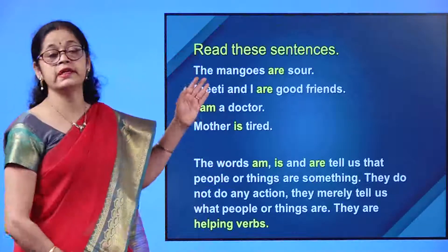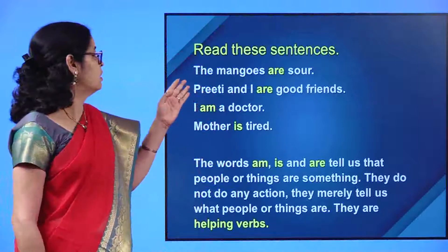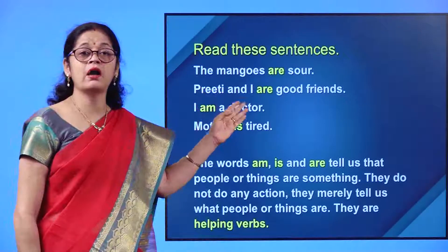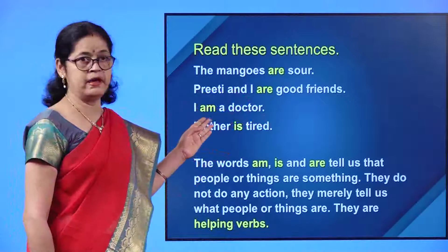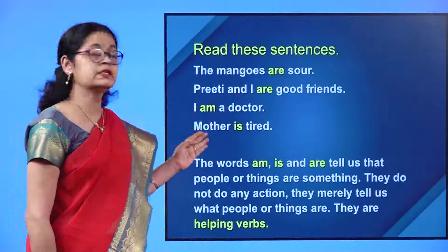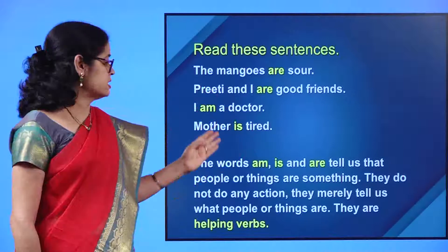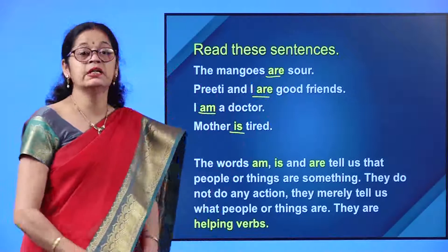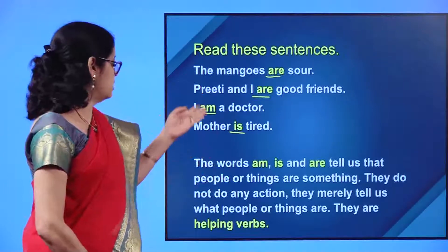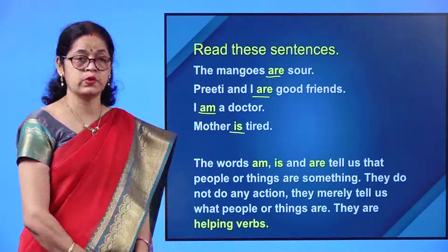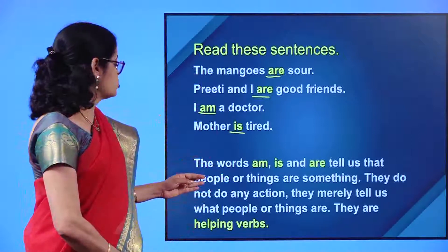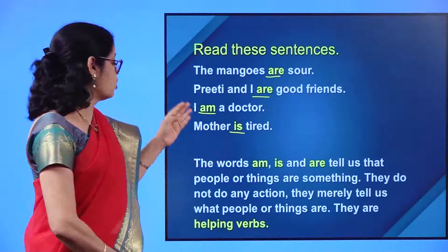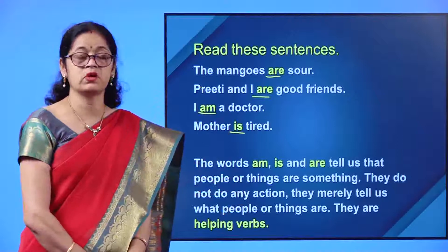Now children, let us read these sentences also. The mangoes are sour. Preeti and I are good friends. I am a doctor. Mother is tired. In these sentences, are, am, and is — they tell us what people and things are. They do not do any actions; these are actually not action words. But they tell us what people and things are.